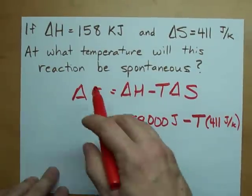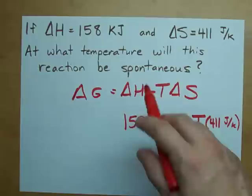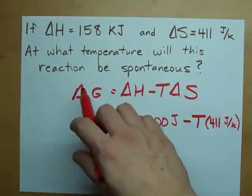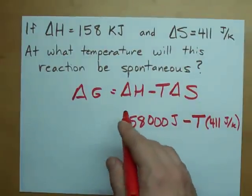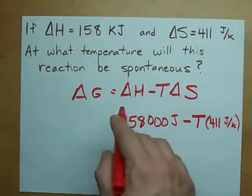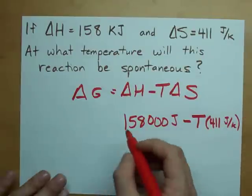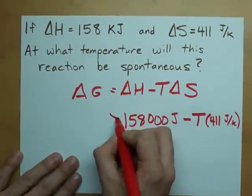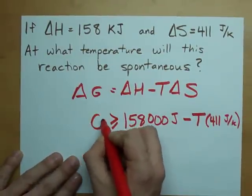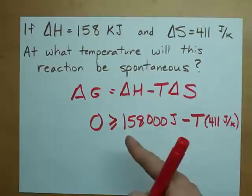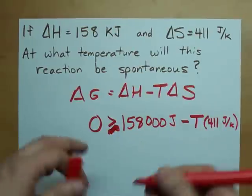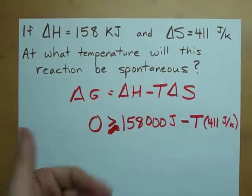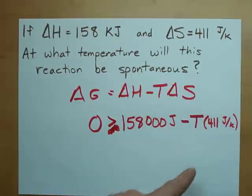Now, I want this to be spontaneous, which means this has to be negative. If this is negative, then that means this, which is delta G, has to be less than or equal to zero. See what I mean? Maybe not equal to. Maybe just less than zero.